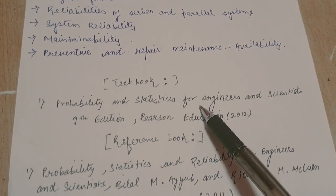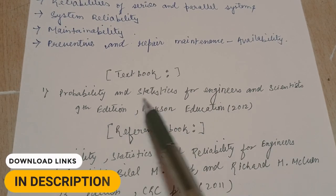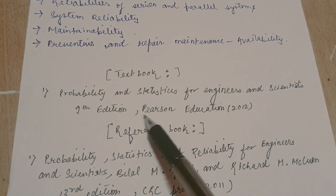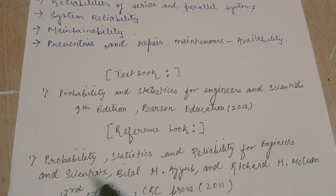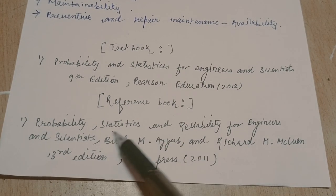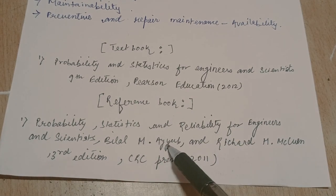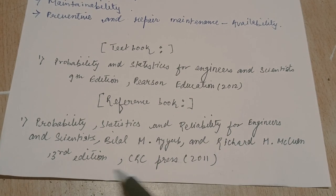Then for reference you can use these books. The first one is Probability and Statistics for Engineers and Scientists, ninth edition. Second one is reference book, Probability and Statistics and Reliability for Engineers and Scientists, Bilal M. Ayyub and Richard H. McCuen, third edition, CRC Press.